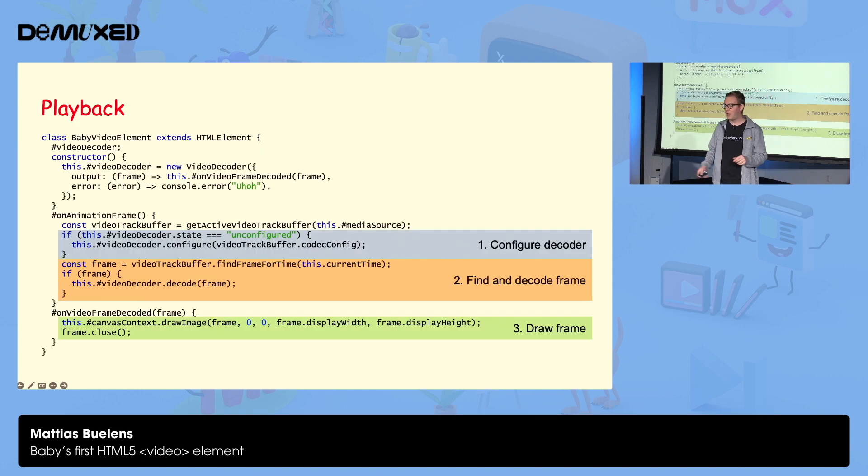So we've got some buffer. We can finally play a video. So we'll have a simple clock that advances with the player's current time. And every time the browser wants to render a frame, we'll configure the video decoder if we haven't done that already. We'll find the correct frame in our buffer that was populated from the media segment. And then we'll decode that frame and then render it. And the rendering is actually quite easy with web codecs, because you can just pass the video frame directly to draw image, and that just works. Really cool.